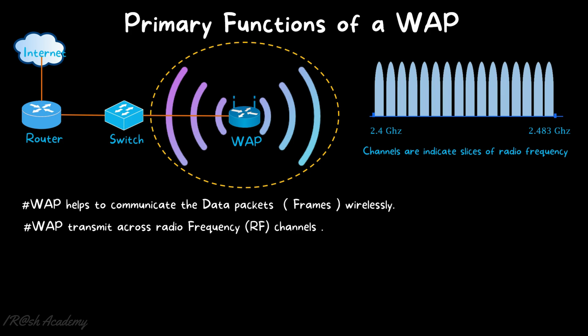Another question arises: what is the meaning of channels? Channels indicate slices of radio frequency. In this screen, you can see a schematic diagram of the 2.4 GHz RF channel, where multiple slices each represent a different channel. The access point uses a specific channel for communication, and whatever devices tune to that channel can communicate with the wireless access point and perform data transmission.